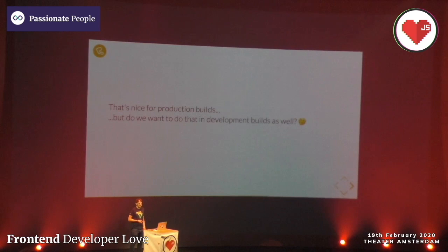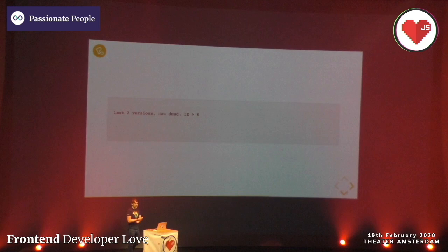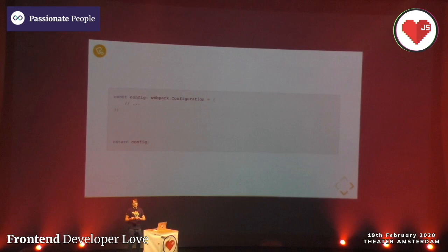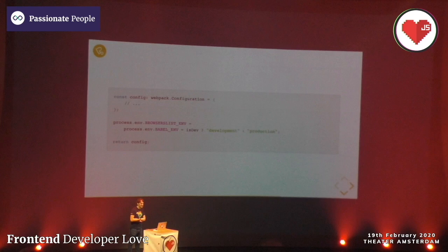That's for production builds, but do we really want that in development builds too? Remember: do less - we want to transpile less in development. When we have the .browserslistrc we can add environments. For production we need to transpile a lot more, but in development we just use the latest browsers - you can add whatever browsers your team uses. This tells Babel to only transpile the necessary things. To make it work, you also need to set NODE_ENV to either development or production. It's a bit hacky but it works - you put that into your webpack config.